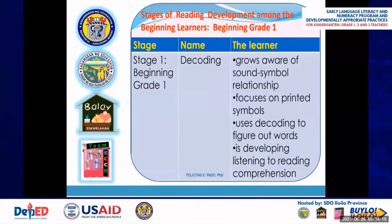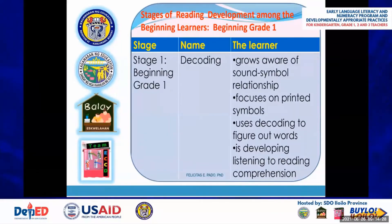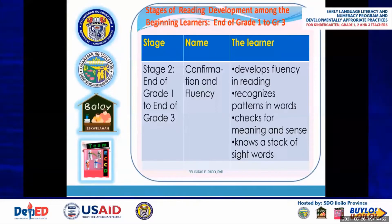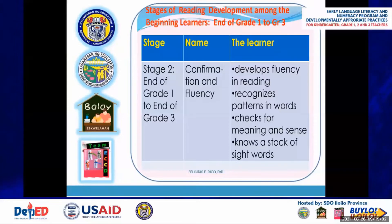The next stage is called Beginning Grade 1, named the Decoding Stage, where a learner grows aware of sound-symbol relationships. Children focus on printed symbols and use decoding to figure out words, while developing their listening to reading comprehension. Stage 2, from the end of Grade 1 to the end of Grade 3, is called the Confirmation and Fluency Stage. Here, learners develop fluency in reading, learn to recognize patterns in words, check for meaning and sense, and should know a stock of sight words.